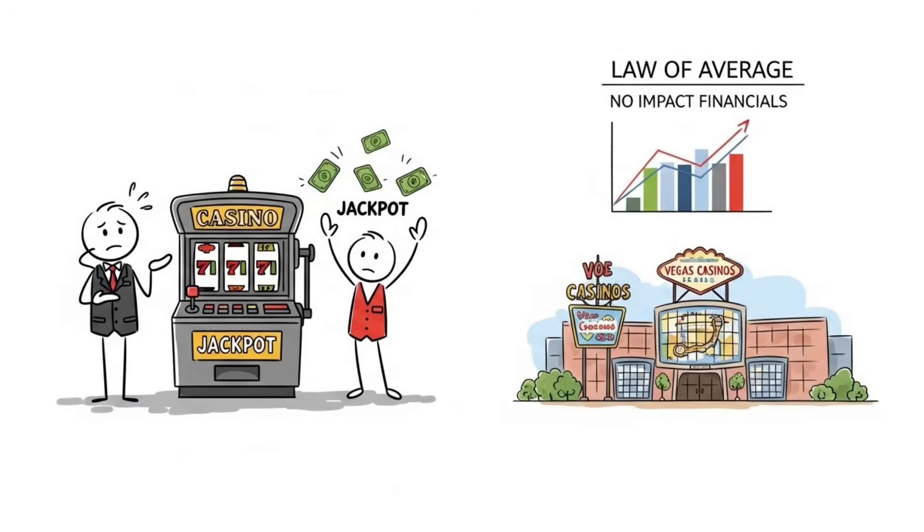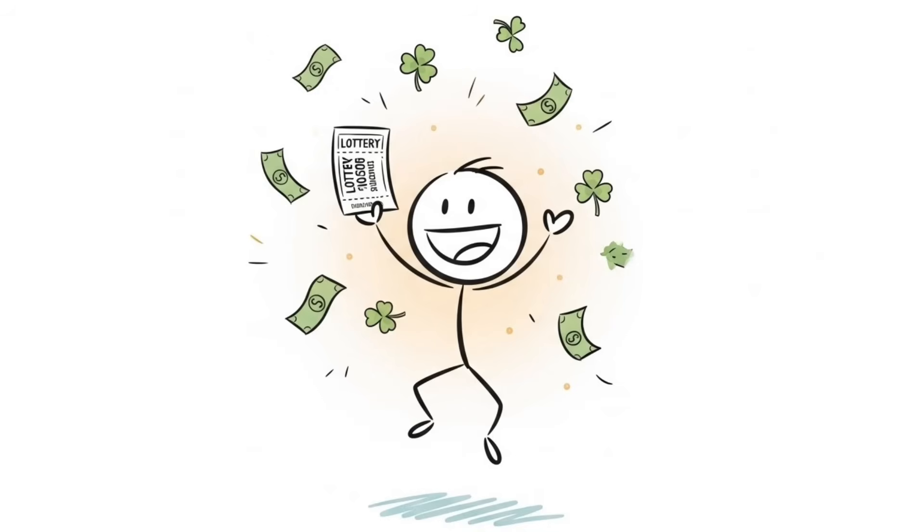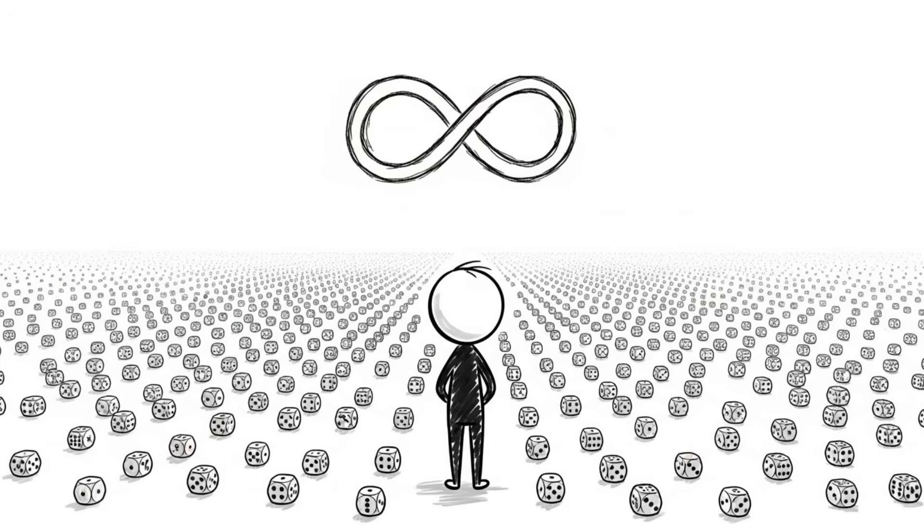Casinos don't panic when someone hits a jackpot because over millions of spins, their house edge grinds everyone down to expected loss. Your lucky streaks aren't the universe speaking to you. They're what happens when infinity rolls dice at scale. The magic disappears when you understand the sample size and zoom out to see the full picture.